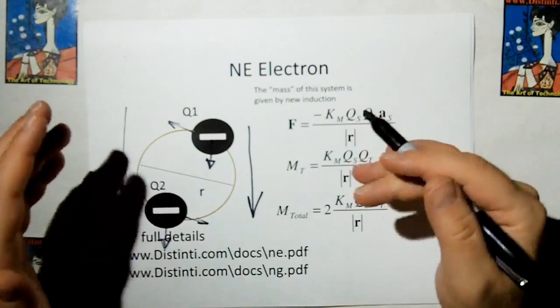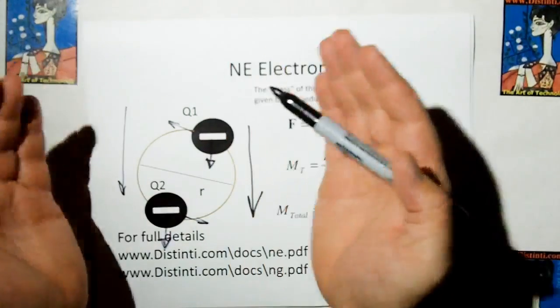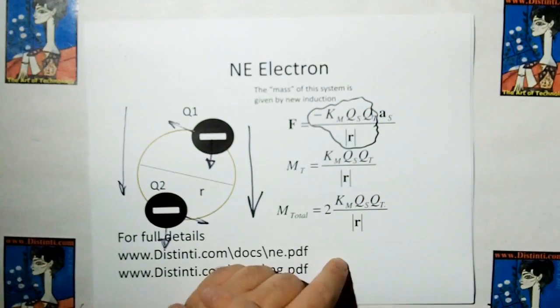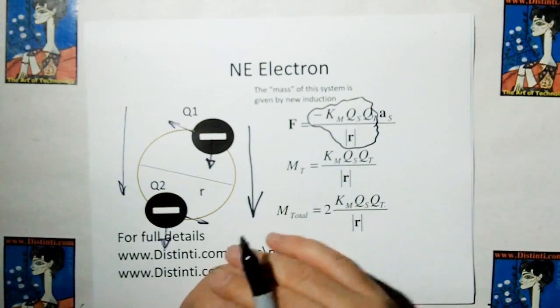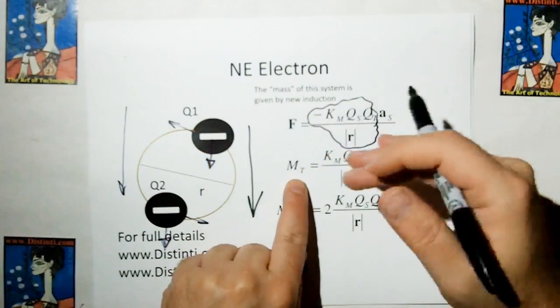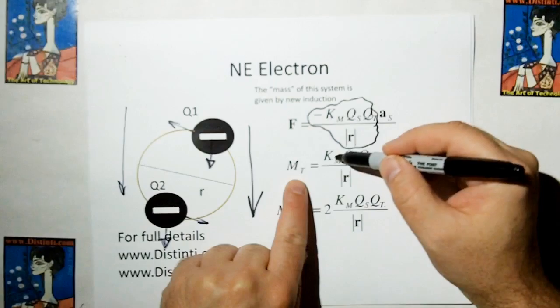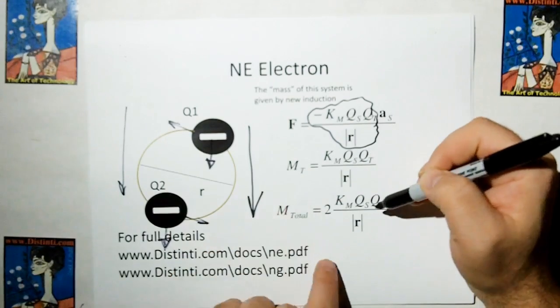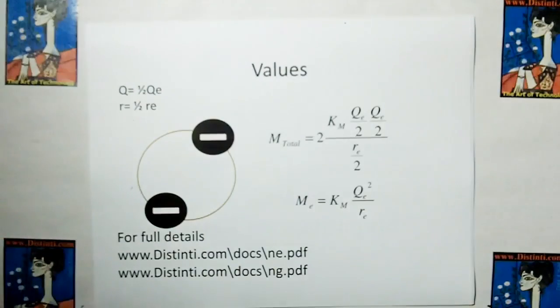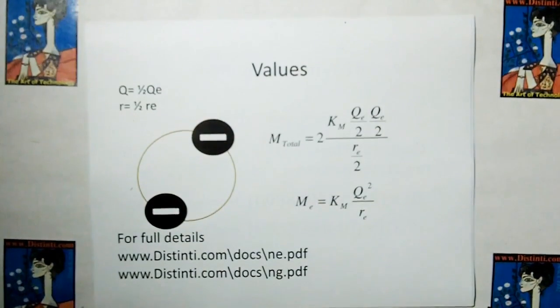So what we can do, instead of looking at the force, we can just say, well this is F equals MA. Divide both sides by acceleration to get the mass of one of the tons. And that would be Km times Q over R. But the total, since it's going to be two of them, we're going to multiply by two.